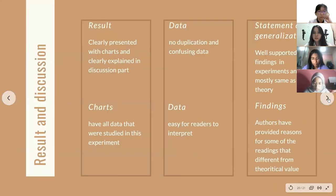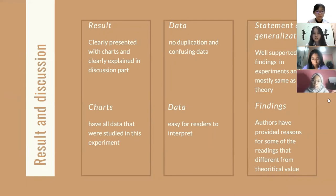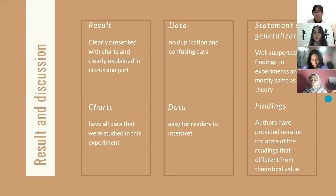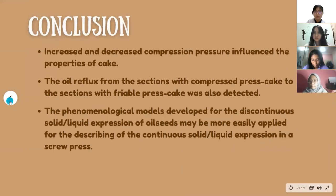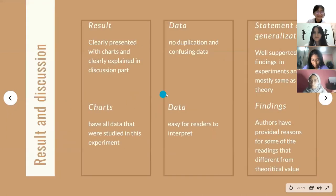For the critique on results and discussion: the results were clearly presented with charts and clearly explained in the discussion part. Charts have all the data that were studied in this experiment, and data was presented in a way that is easy for readers to interpret. Statements and generalizations of the authors were well supported with findings from experiments, and most findings were consistent with theory. For those findings which differ from theory, the authors did provide explanations.